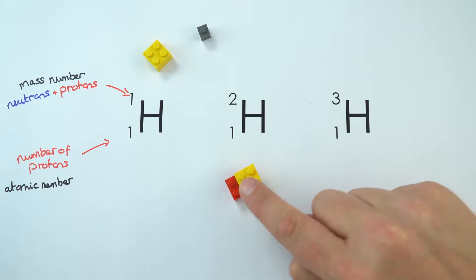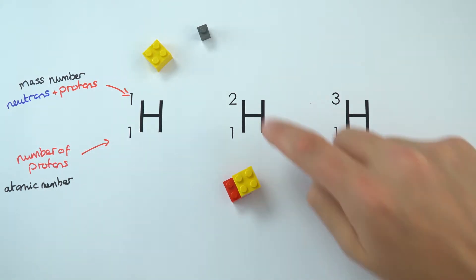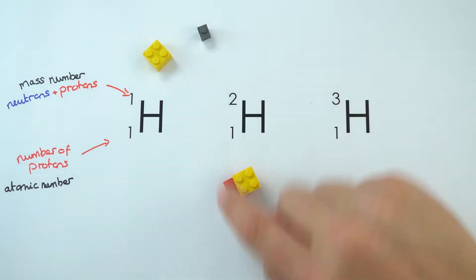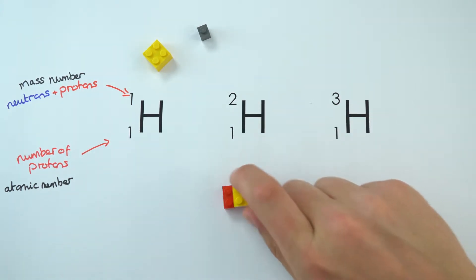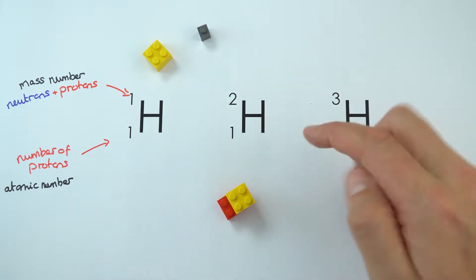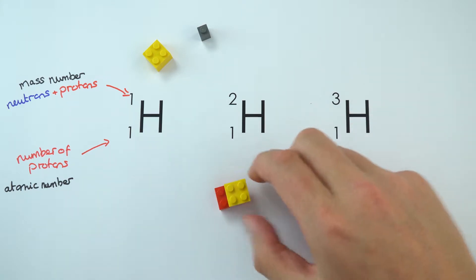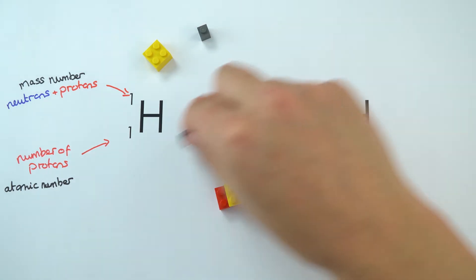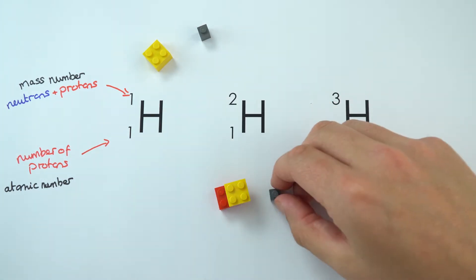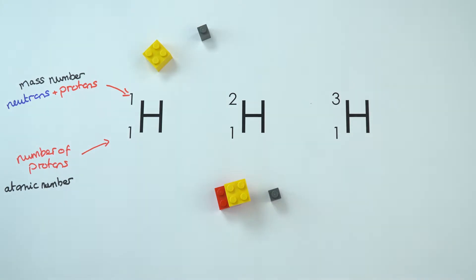We've got another one which again has one proton — the yellow block — but this time it's got two things in the nucleus: one proton and one neutron. Once again, this is surrounded by one electron orbiting around it.